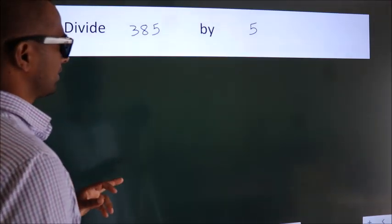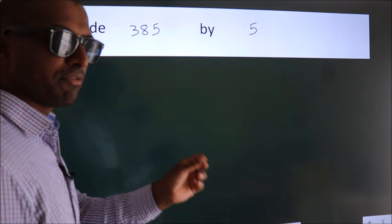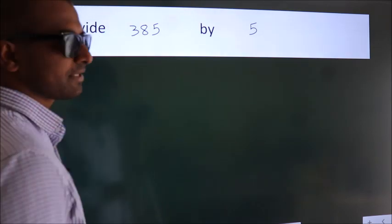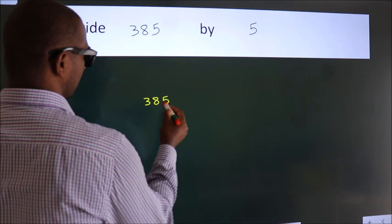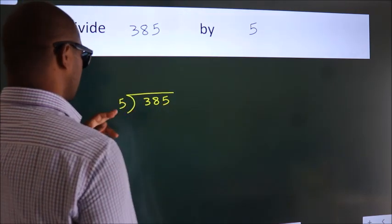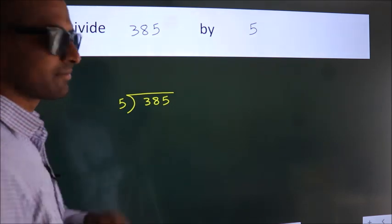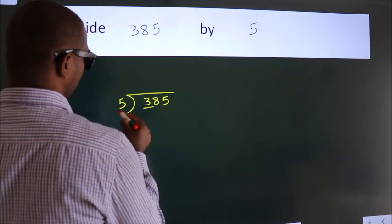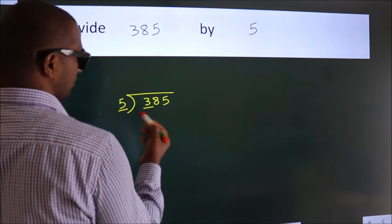Divide 385 by 5. To do this division, we should frame it in this way: 385 here, 5 here. This is your step 1. Next, here we have 3. 3 is smaller than 5, so we should take two numbers: 38.